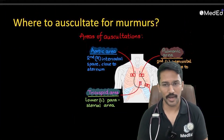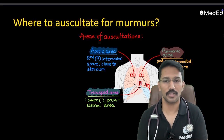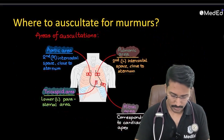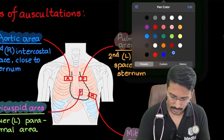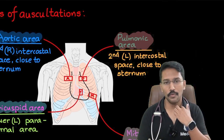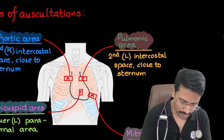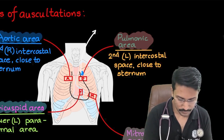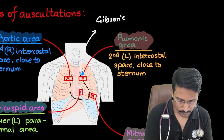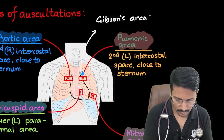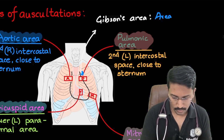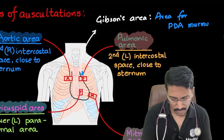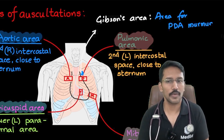There are two more areas to add to our list. On the left, just above the pulmonic area — in the first intercostal space — there is one more area called Gibson's area. This is the area for patent ductus arteriosus murmur, or the machinery murmur of PDA.